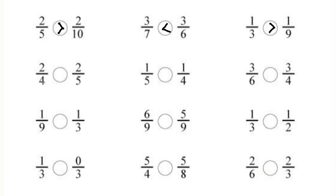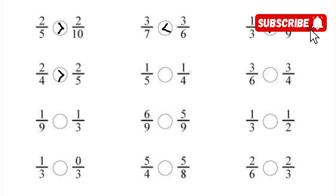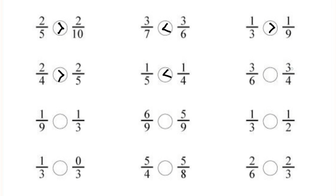1 by 5 is lesser than 1 by 4 — again numerators are same. The fraction with the greater denominator has the lesser value. So 1 by 5 is lesser than 1 by 4. Next, 3 by 6 and 3 by 4 — again numerators are same. So 3 by 6 is lesser than 3 by 4 because 3 by 6 has the greater denominator. In the next question, 1 by 9 is smaller than 1 by 3 because if the numerators are same, the fraction with the greatest denominator has the lesser value.